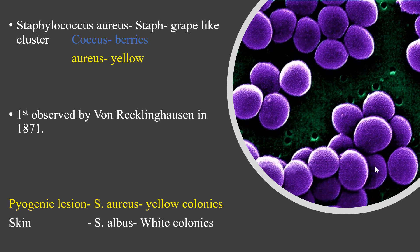Starting with the name: 'staphylococcus' refers to a cluster arrangement — if you look at the figures, all these cocci are arranged in clusters, like grapes. As for classification, if a bacterium has 'coccus' at the end of its name, the majority are gram-positive. Exceptions include Neisseria and Branhamella, which are gram-negative. Bacteria like Staphylococcus, Streptococcus, Micrococcus, and Enterococcus all have 'coccus' at the end and are gram-positive.